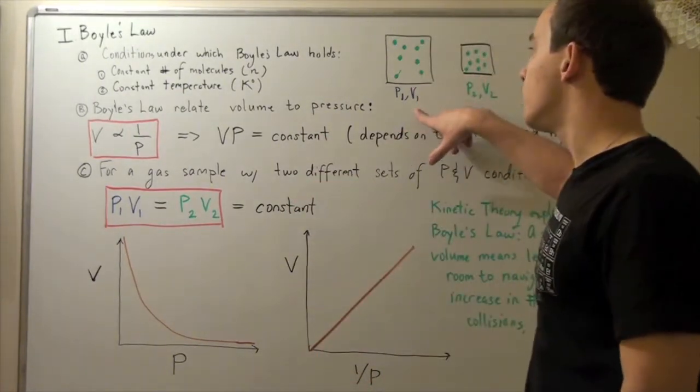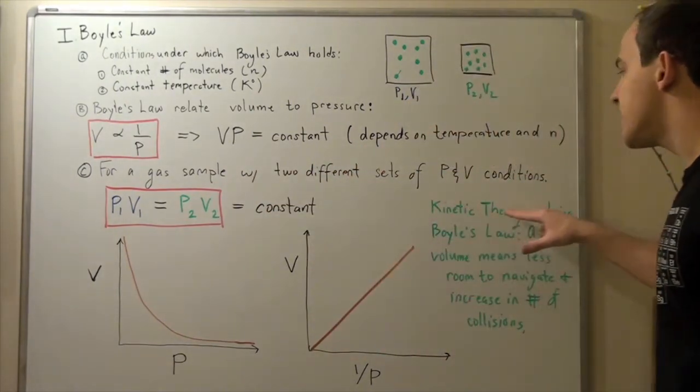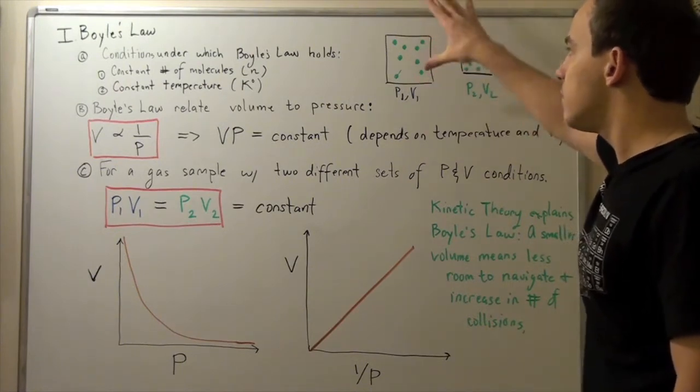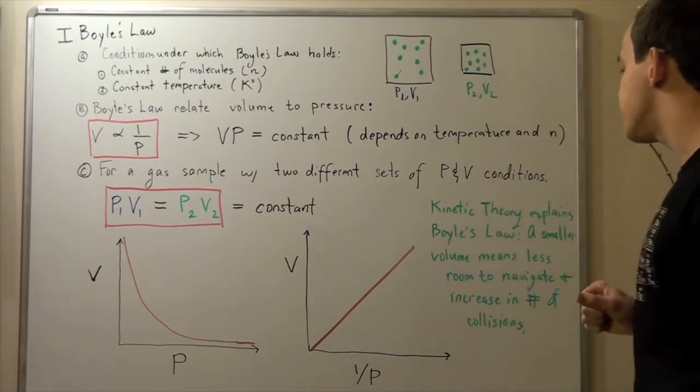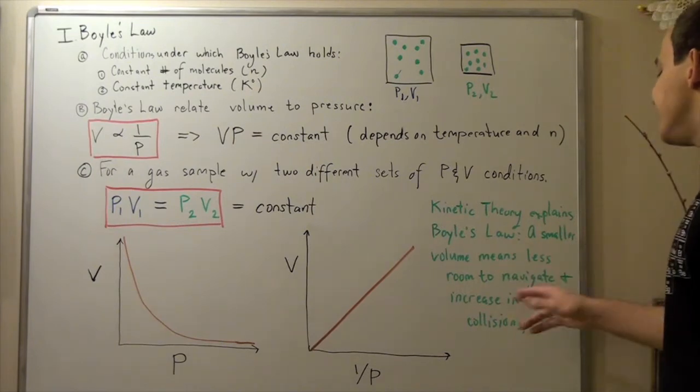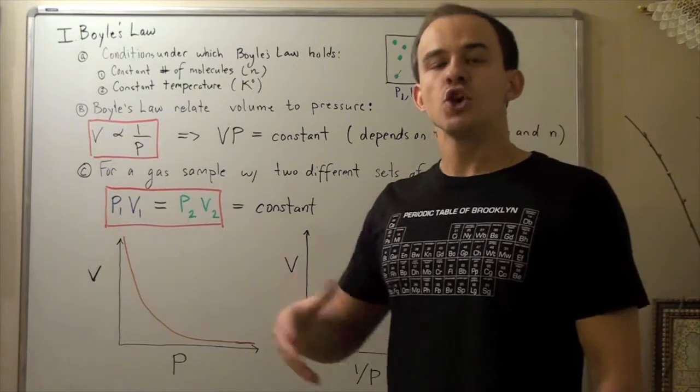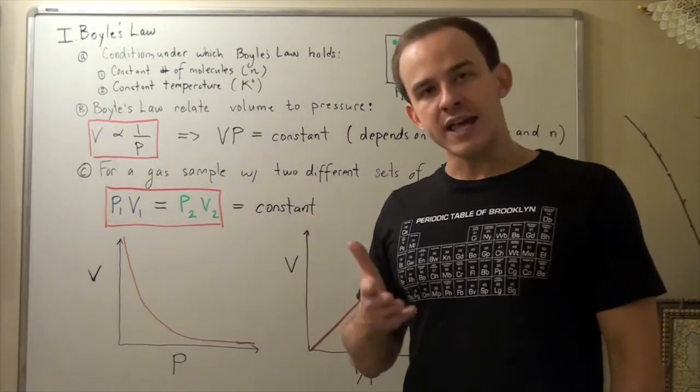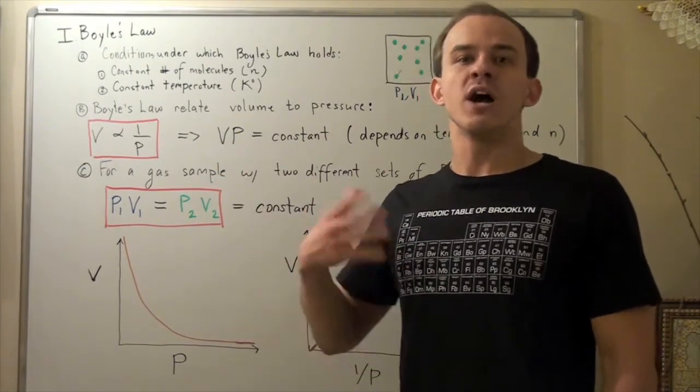And so if less collisions, that means we have less pressure. So the bigger the volume, the smaller the pressure. So once again, we see that we can use the kinetic theory to explain nanoscopic or nanoscale behavior of these molecules. And once again, the kinetic theory explains Boyle's law. A smaller volume means less room to navigate and increase in number of collisions. This increase in collisions will increase our pressure because by definition pressure is force per unit area. And if we have more molecules hitting the walls, we have more force and so a higher pressure.